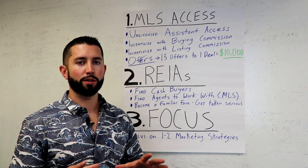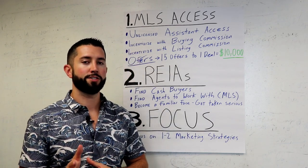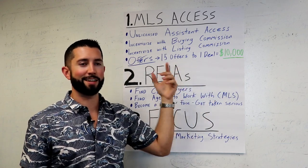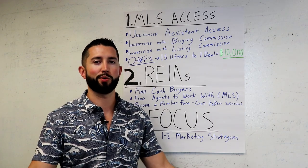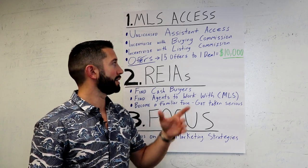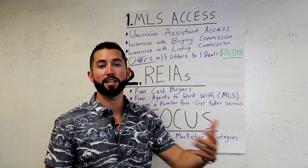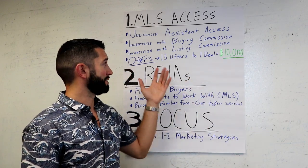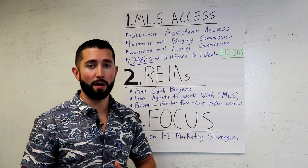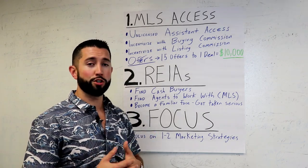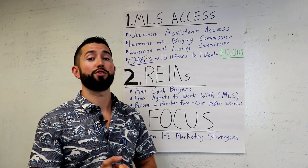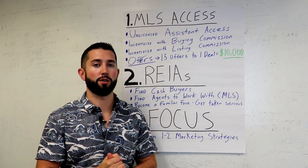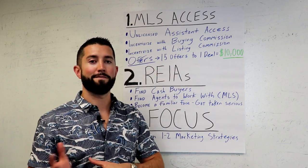Having done this for eight years, what's really important to understand is that it's a numbers game. It takes about 15 offers to get one deal accepted — a 15-to-1 ratio to make a $10,000 wholesale fee. Most people don't know this; they send two offers, get two no's, and quit. Those people won't be successful. You need to keep going — if you get 14 or even 15 no's, keep submitting offers. It's not unreasonable to do at least one offer a day — that's 30 offers a month and you should be getting around two deals. Once you really get rocking and rolling, you can do up to five offers a day. That's 150 offers a month — that's what the big players do. So remember that 15-to-1 offer ratio to make $10,000.